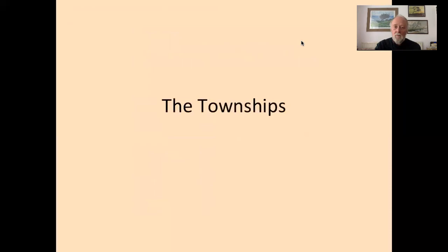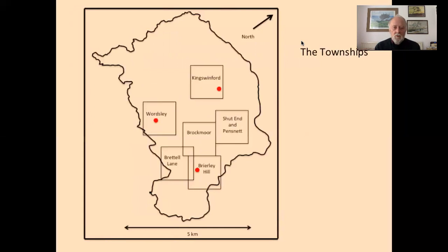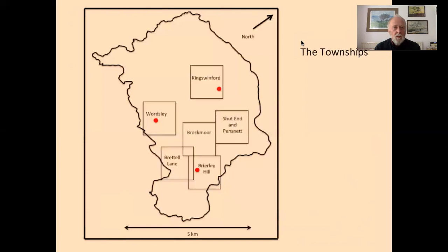Now to consider the individual townships: in the book the speaker has produced discussions of each of six areas, but to avoid being tedious he has chosen just three — King Swinford, Wordsley, and Shut End and Pensnet. King Swinford was chosen as the ancient centre; Wordsley as a well-developed industrial area; and Shut End and Pensnet as an area that developed significantly between 1822 and 1840 — and also because that is where the speaker was born and brought up, which he calls author's privilege.